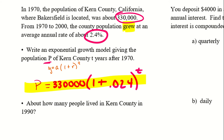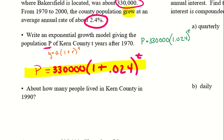If you wrote it as p equals 330,000 times 1.024 to the power of t, that's the same thing — one just has it added already. We're just asking for an exponential growth model, so just the equation so we can solve for anything we need.